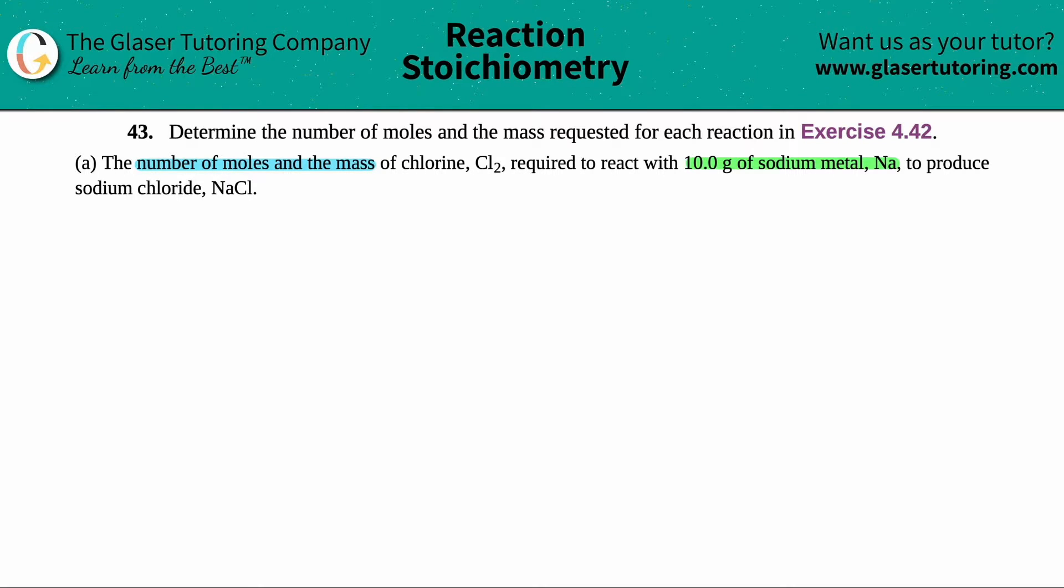Okay, so they gave me a lot of compounds here or molecules. We want to find out the amount of chlorine, aka Cl2, and it looks like it's being reacted with sodium to produce sodium chloride, NaCl. Now, before we do any math, we have to write a balanced equation, especially if you see that you're dealing with multiple compounds or molecules, and they are reacting with each other and they're producing a product.